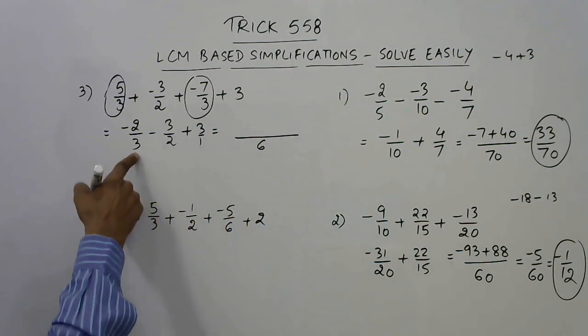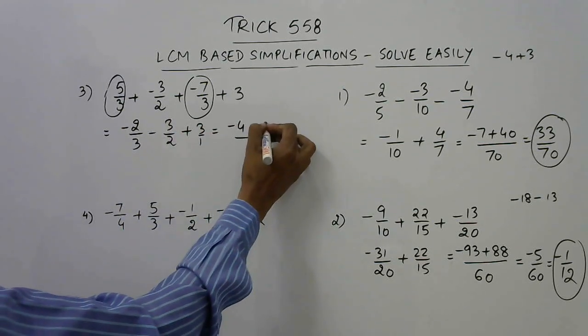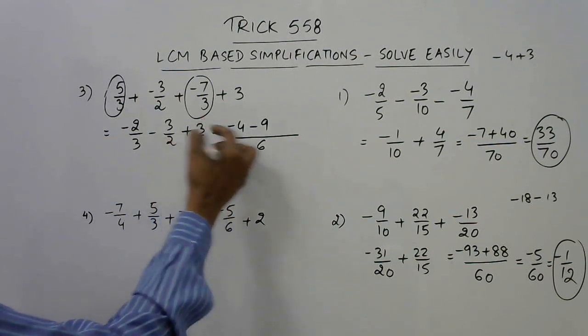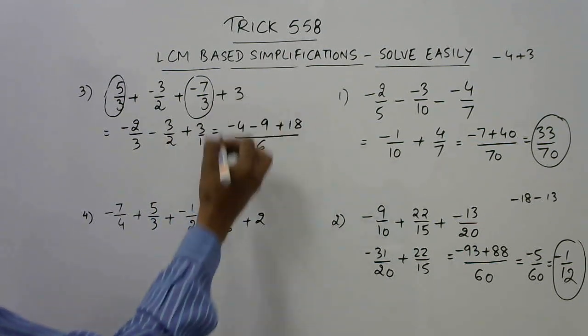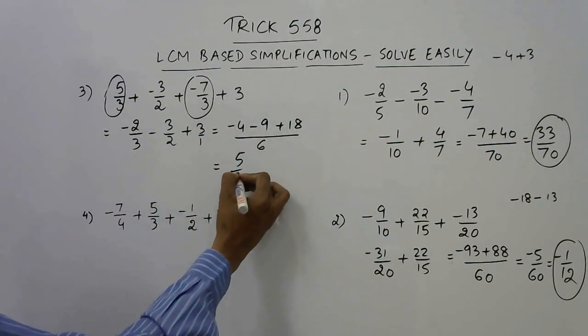6 divided by 3 is 2, so minus 4. 6 divided by 2 is 3, so minus 9 and 6 divided by 1 is 6, so 18. The answer for the question 18 minus 13 that is 5 upon 6.